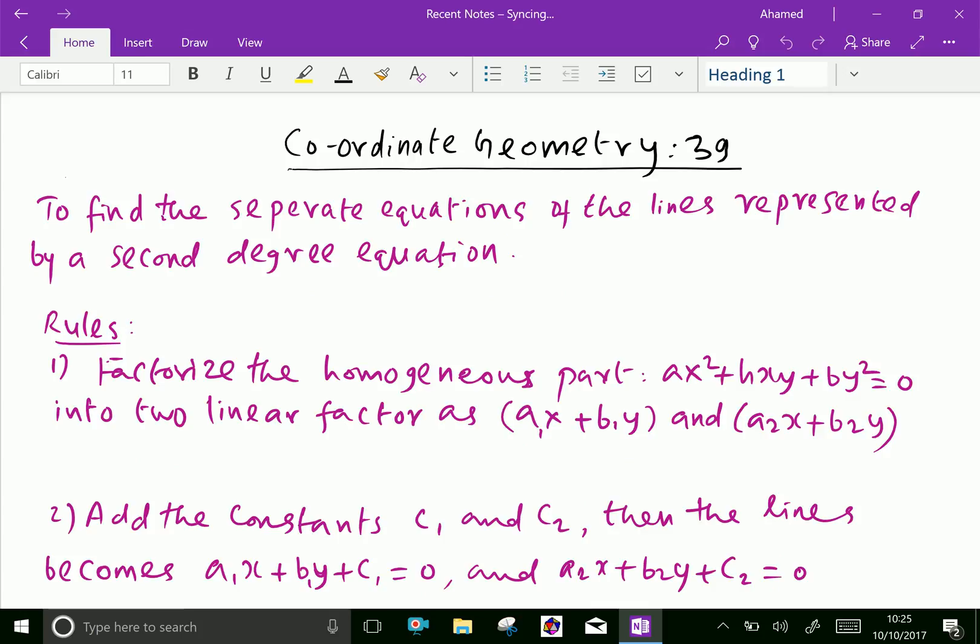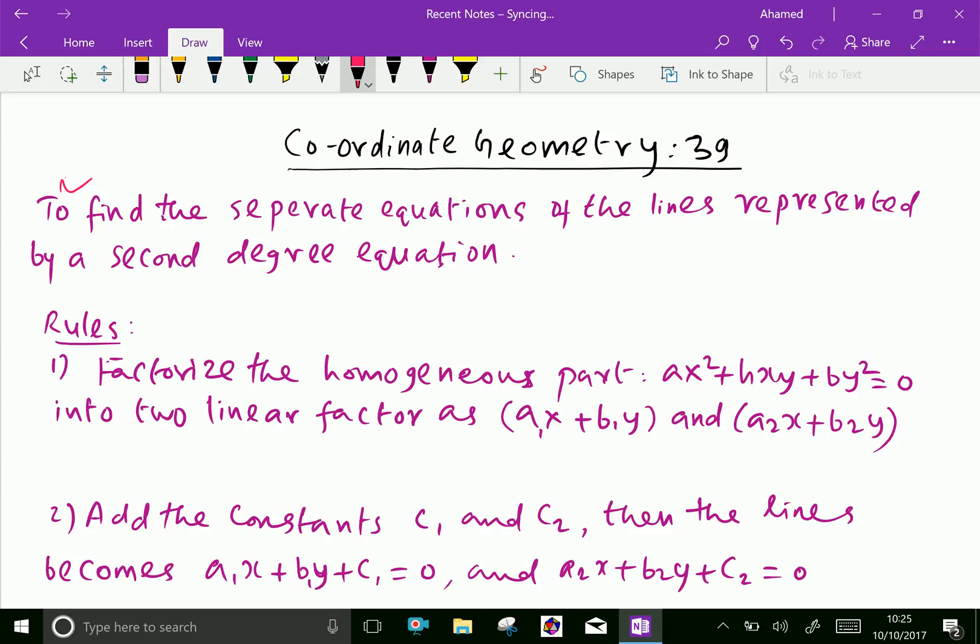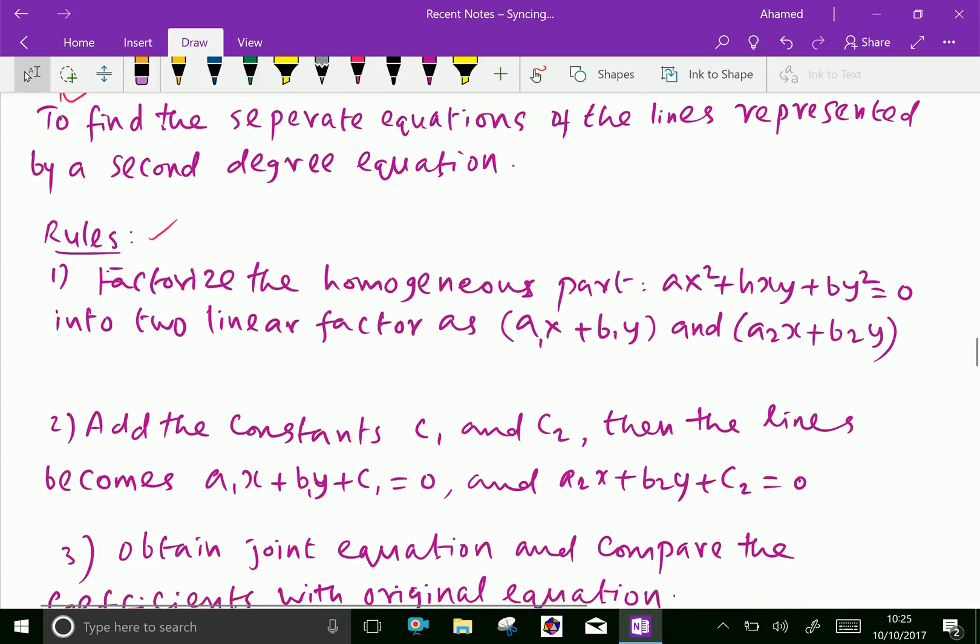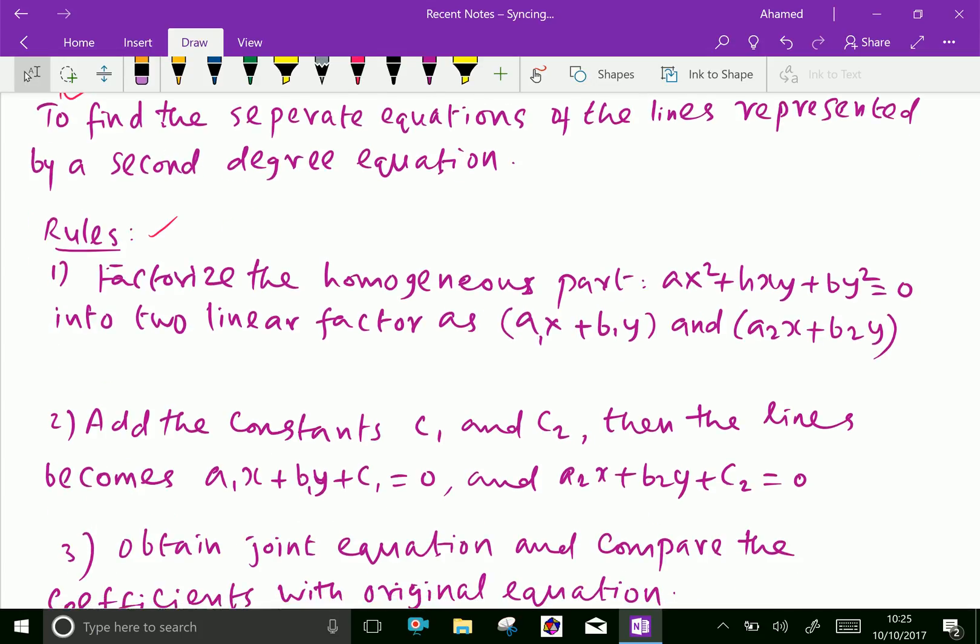To find the separate equations of lines represented by a second degree equation, let us see the rules to find it. First, factorize the homogeneous part, that is ax squared plus hxy plus by squared equals zero, into two linear factors as a1x plus b1y and a2x plus b2y, having two straight lines passing through origins.